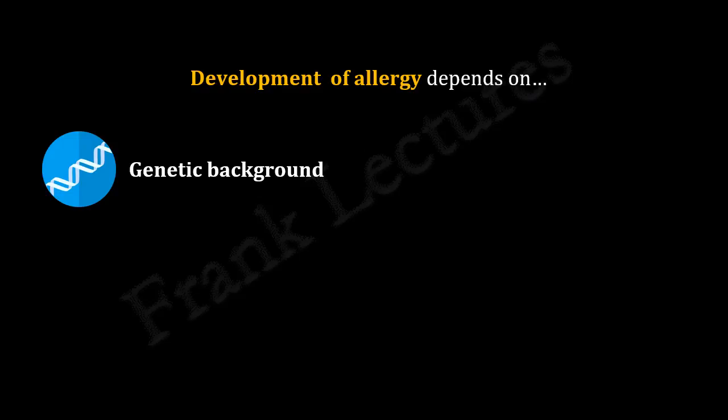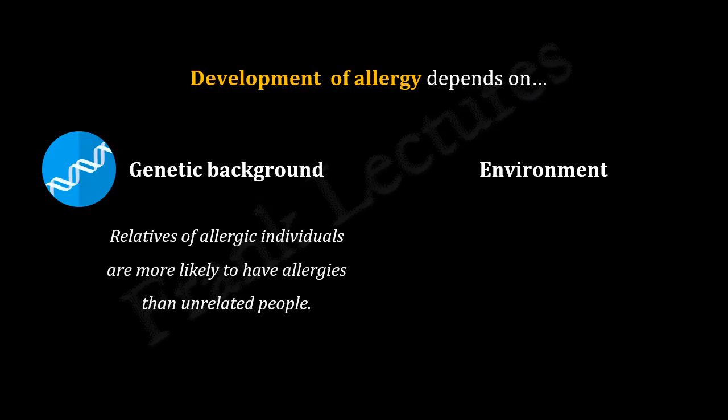Two important factors having a major role in the development of allergy are the genetic background of the individual and the environment. It has been found that relatives of allergic individuals are more likely to have allergies than unrelated people. Families in which both parents are allergic have a 50% chance of having an allergic child. Environmental factors also contribute to the development of allergies, which scientists explain as the hygiene hypothesis.